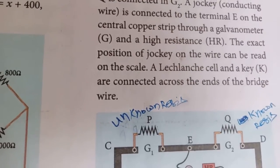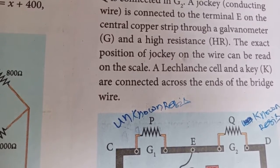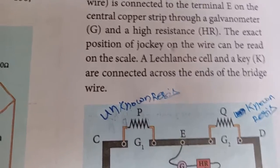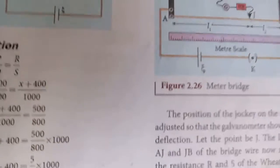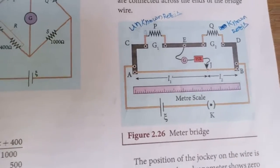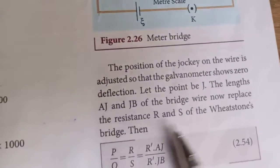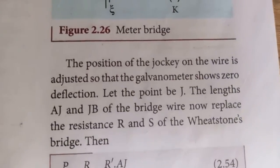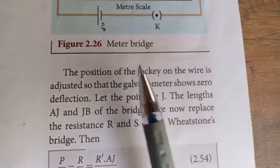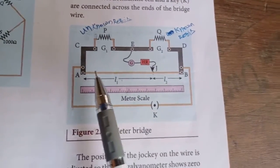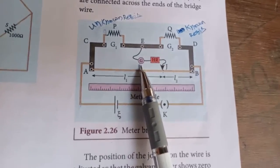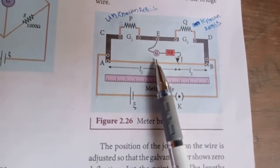The power supply is connected across the ends of the bridge wire. The position of the jockey on the wire is adjusted so that the galvanometer shows zero deflection, indicating the bridge is balanced.